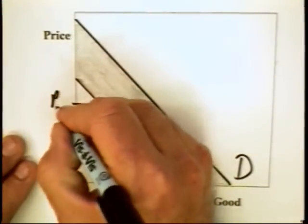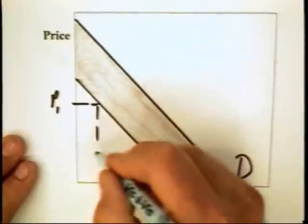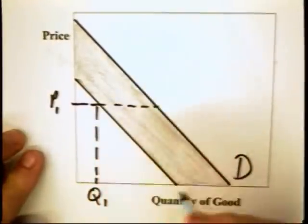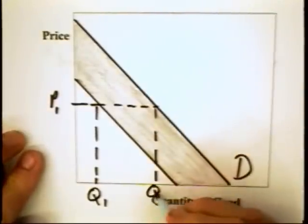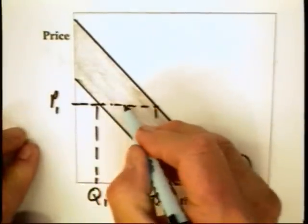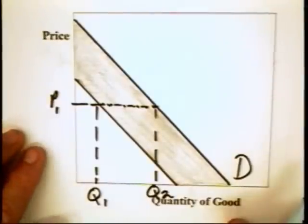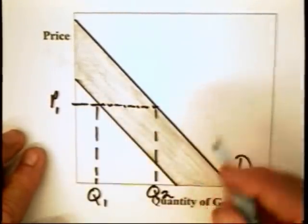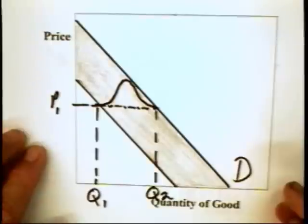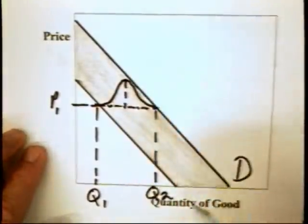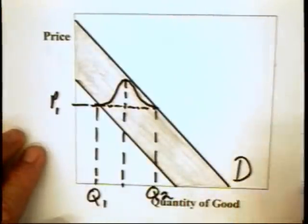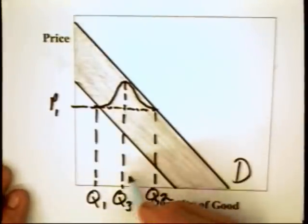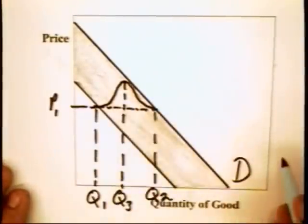What does that do to the law of demand? Well, what this curve says is that at a price of P1, the quantity demanded by these consumers can be as little as Q1. But the quantity demanded can be as great as Q2. And the quantity demanded can be all throughout here. Well, how does that jive with the law of demand? Well, we can say that if there are a lot of consumers and they're all behaving randomly, there is something of a bell curve that's along this price line. And the average amount that's going to be bought is going to be in the center of that curve. That is, at a price of P1, the quantity bought is going to be Q3, on average. The total quantity bought is going to be Q3 times the number of consumers represented by this bell curve.